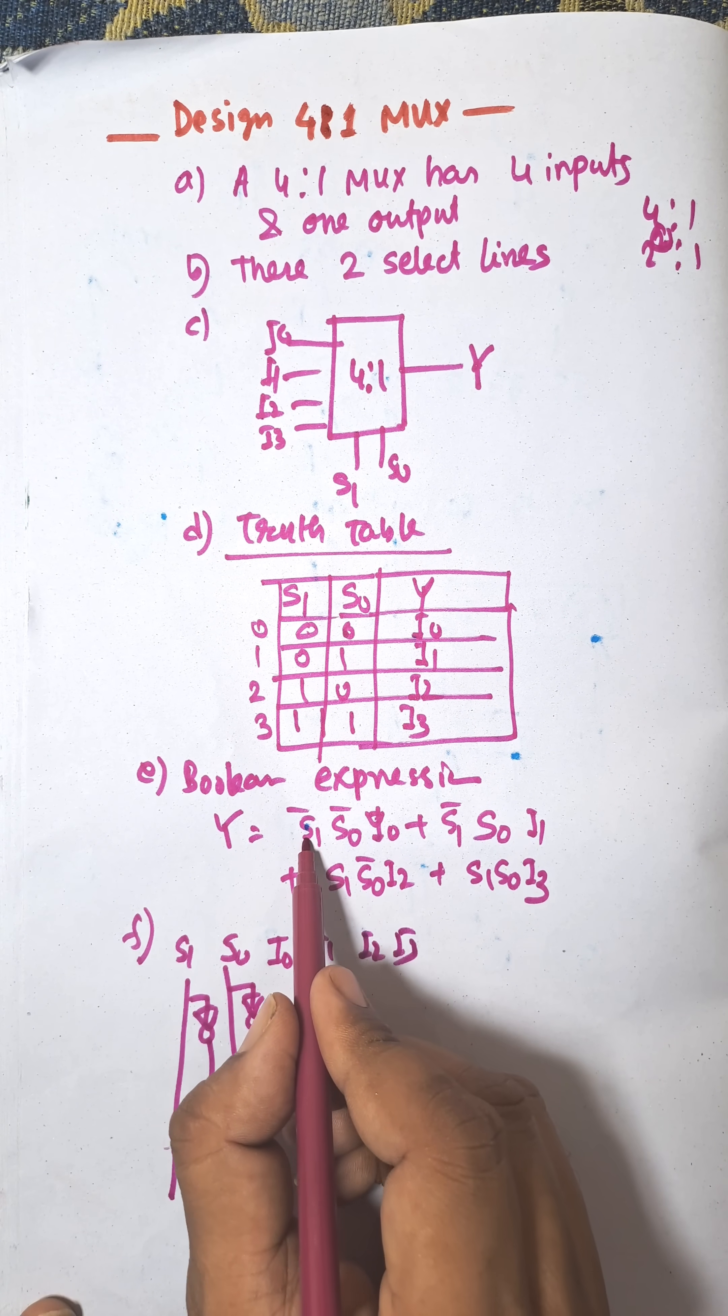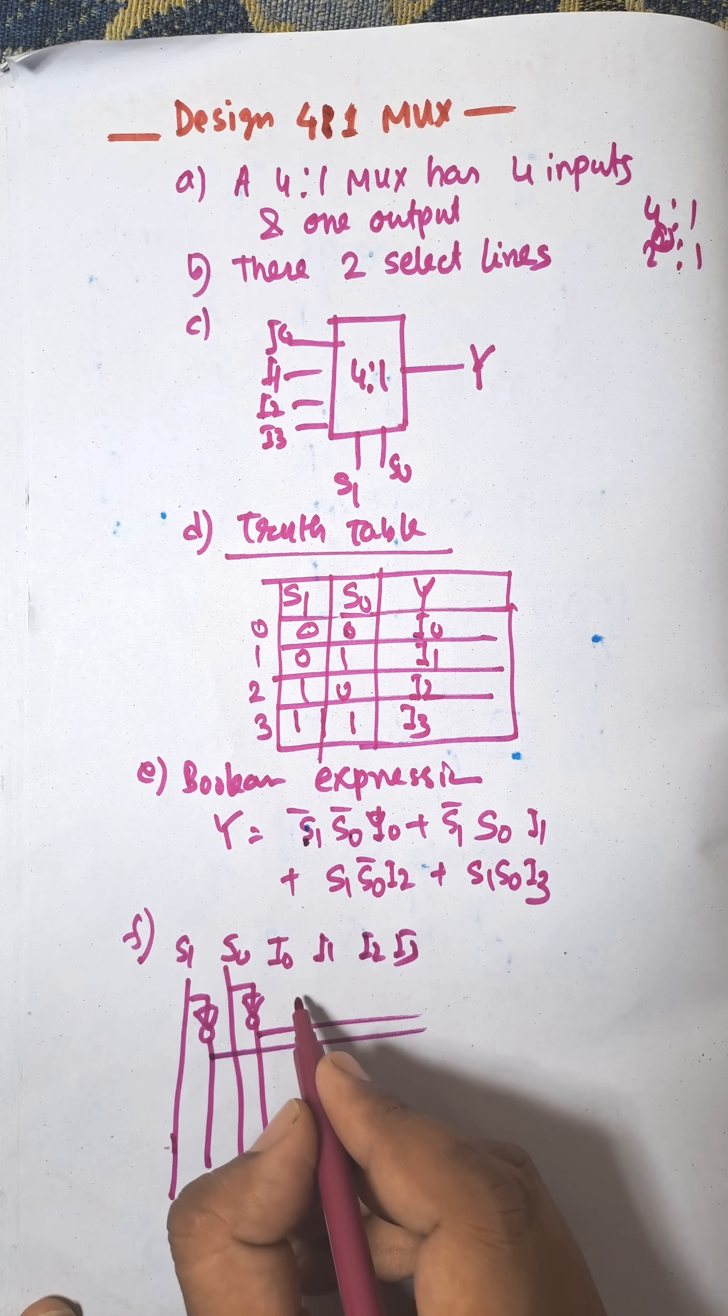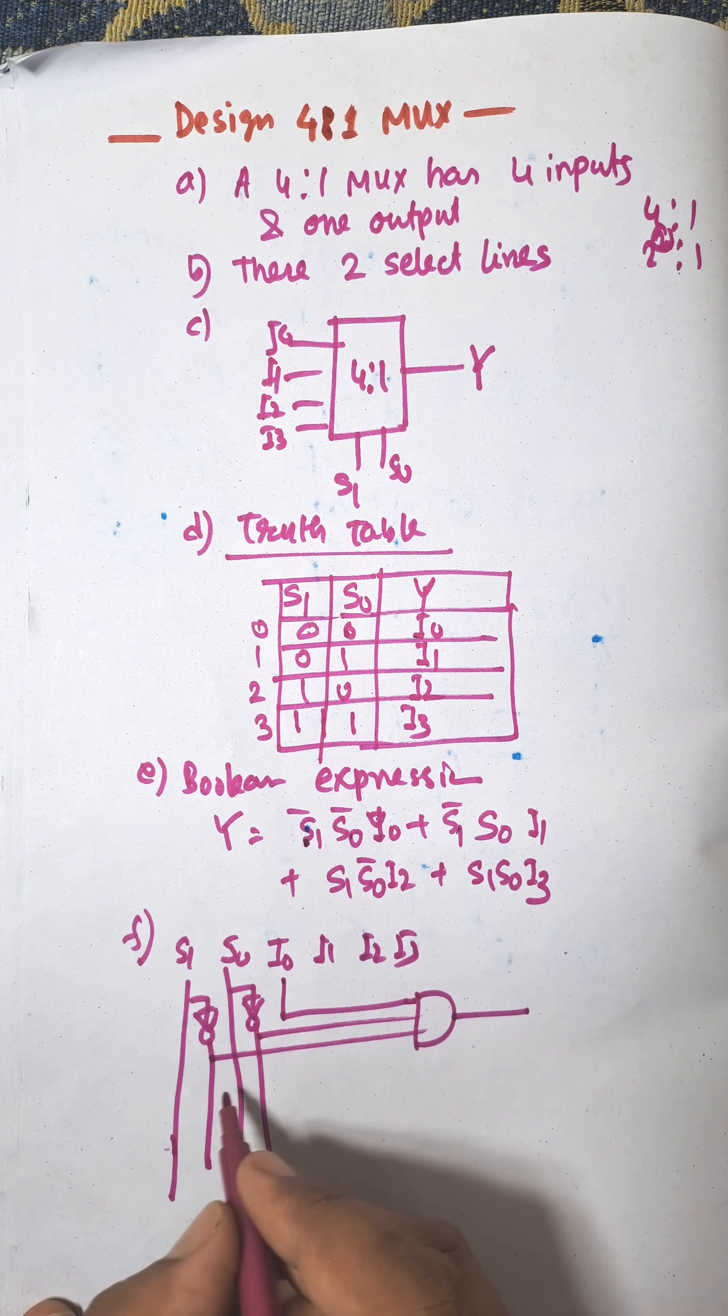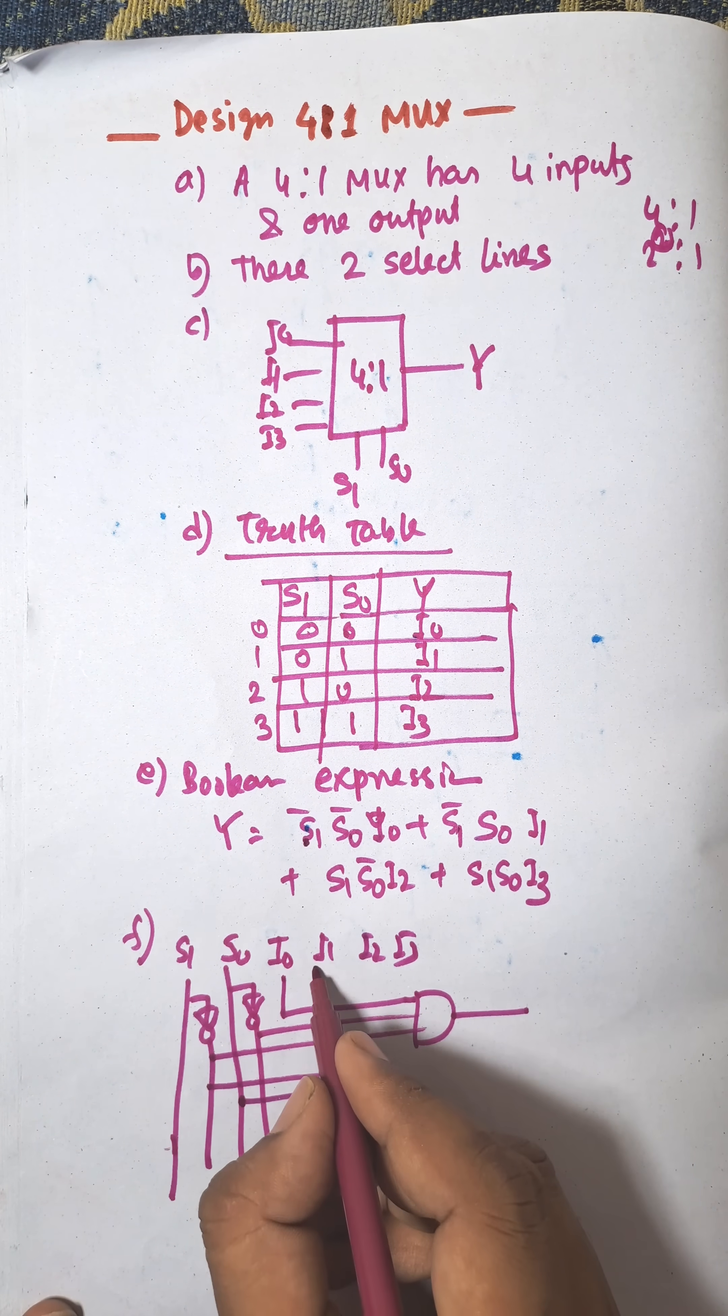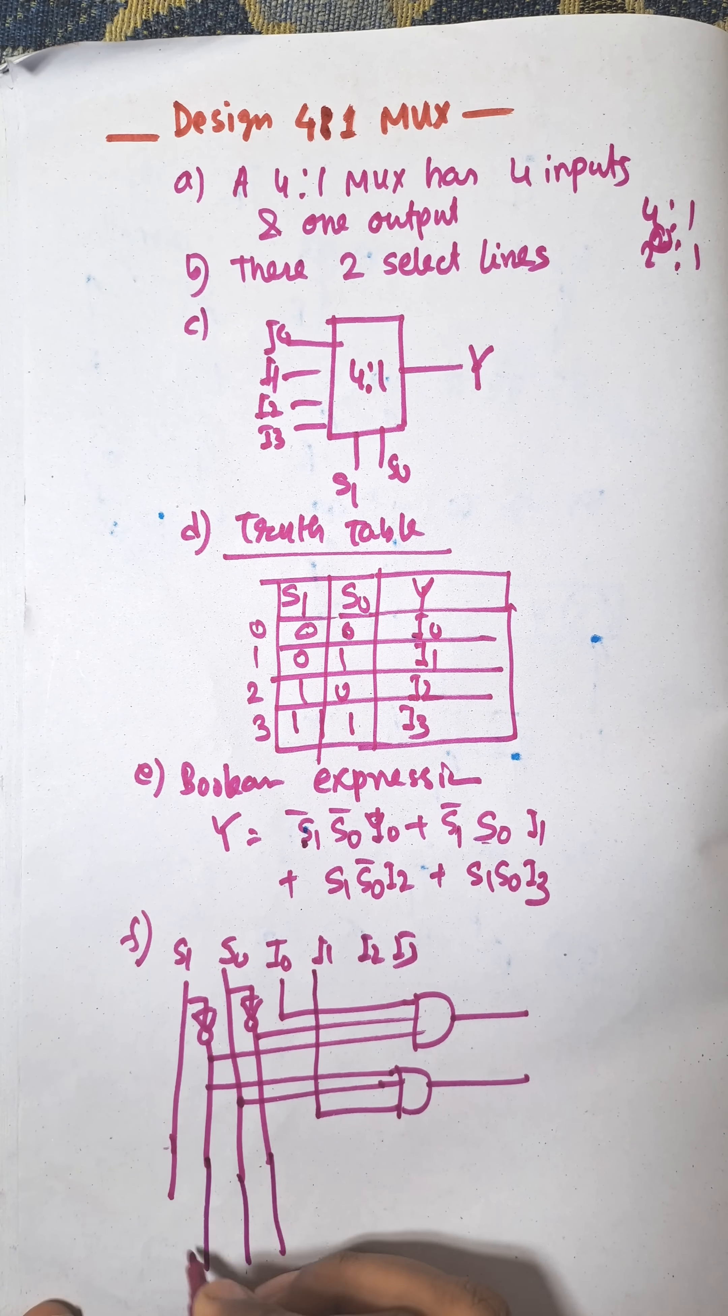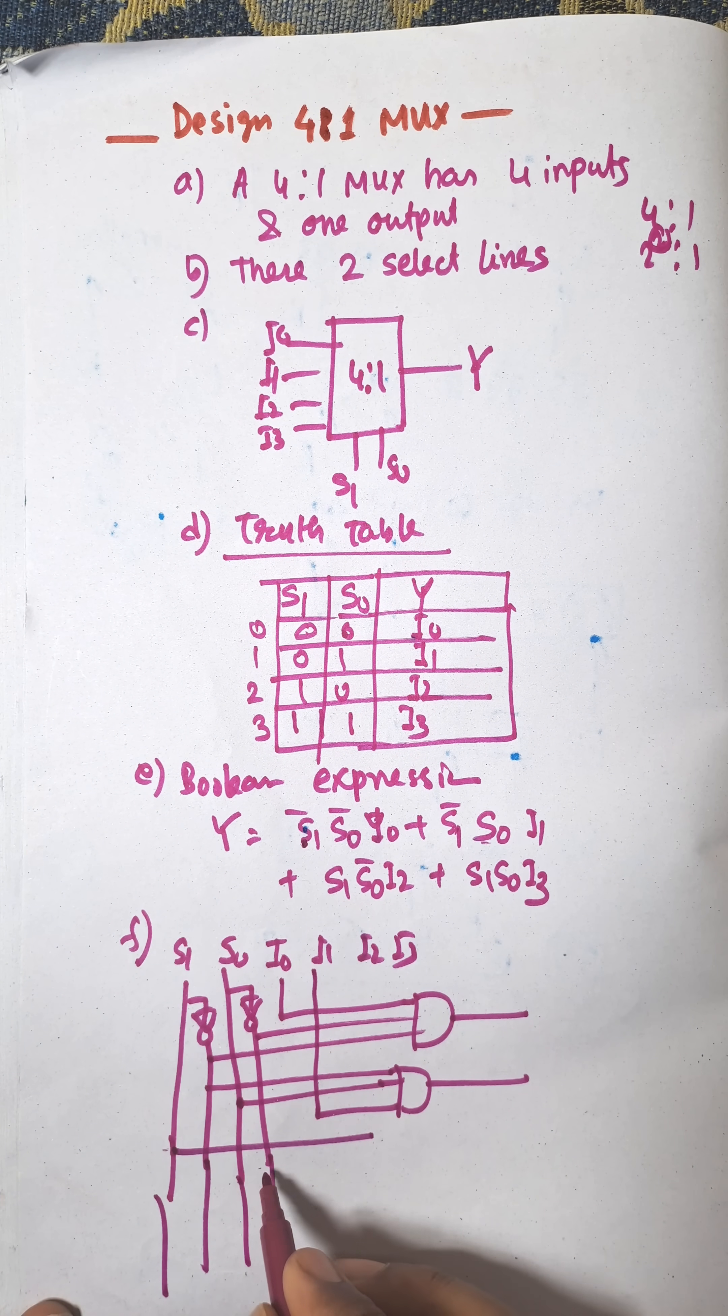S0 bar, S1 bar, and I0 are multiplied using an AND gate. Next one is S1 bar, S0, and I1, that is equal to this expression.